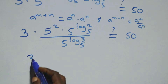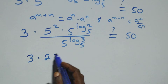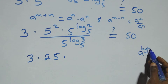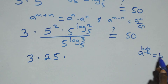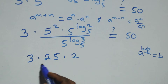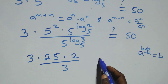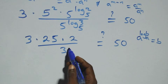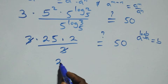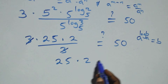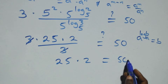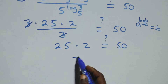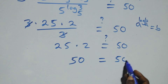We have 3 times 5 squared, that's 25. Then, using the identity a raised to power log base a of b equals b, we get 2 over 3 here. So this is 3 times 25 times 2 over 3. The 3s cancel, leaving 25 times 2, which equals 50. Left-hand side equals the right-hand side.